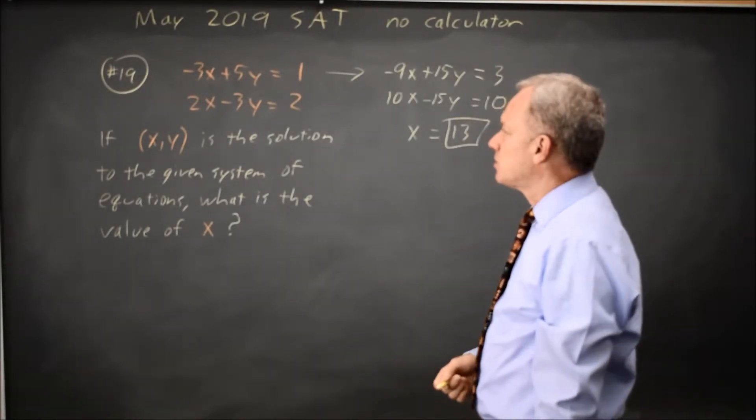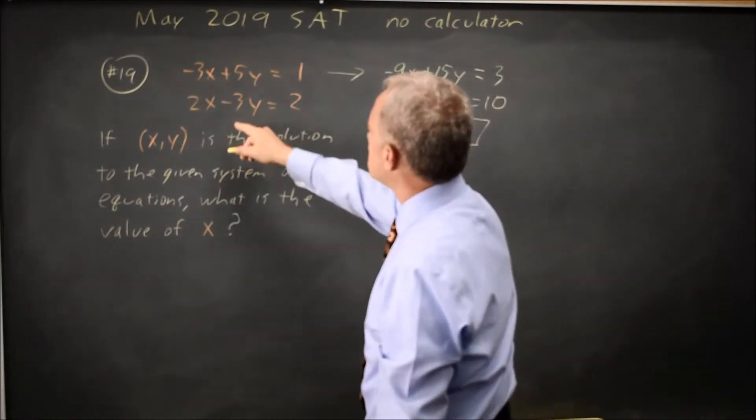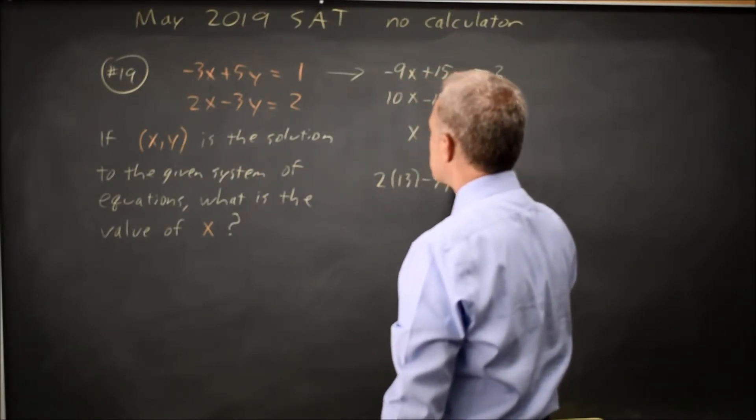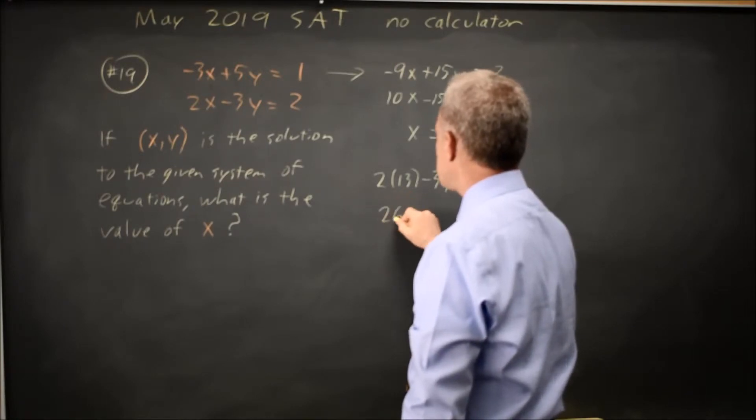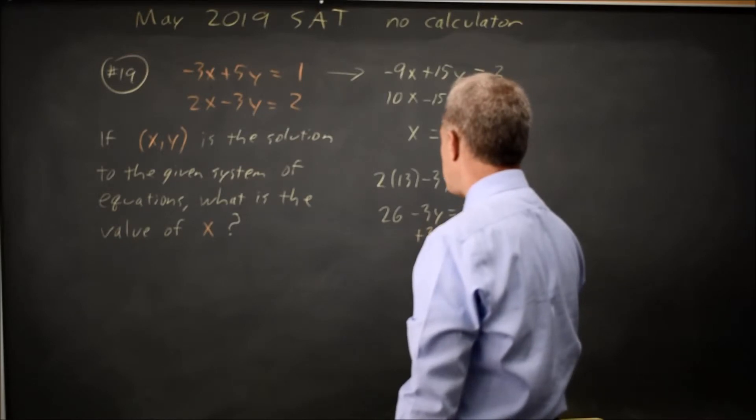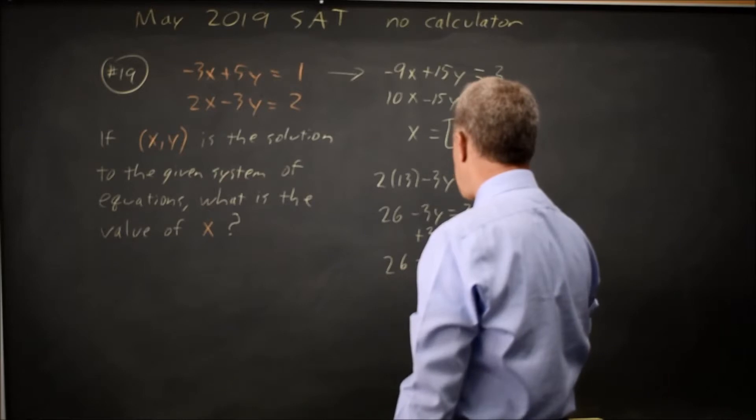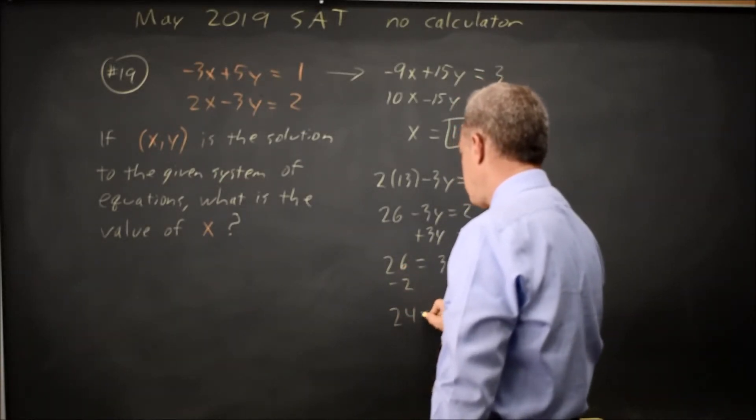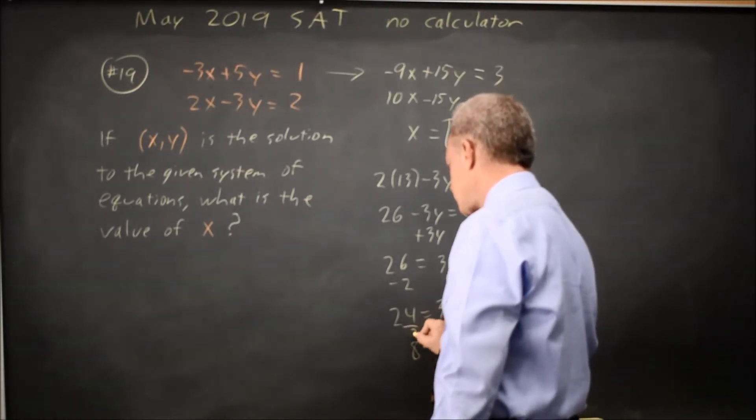I feel a little squeamish about solving for x and not y, so I'm going to solve for y in the second equation. Twice my x value, minus 3 times y equals 2. So 2 times 13 is 26. Minus 3y equals 2. Let's add 3y to both sides. 26 equals 3y plus 2. Subtract 2 from both sides. 24 equals 3y. So y equals 8 when I divide both sides by 3.